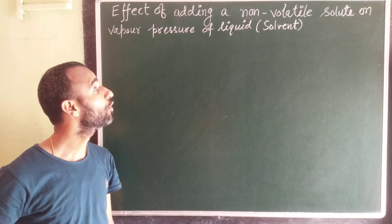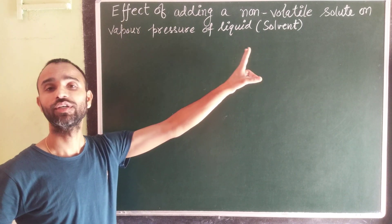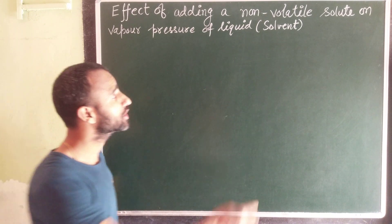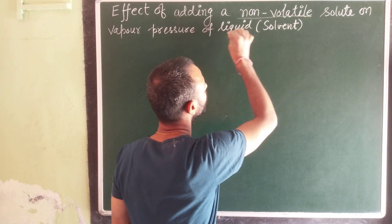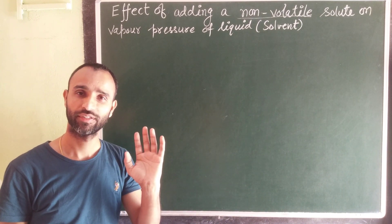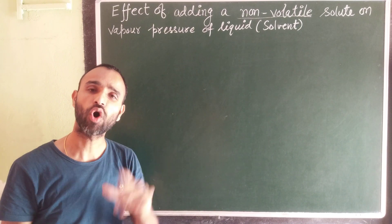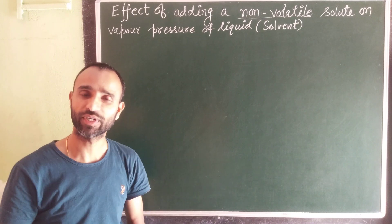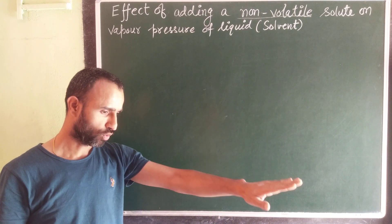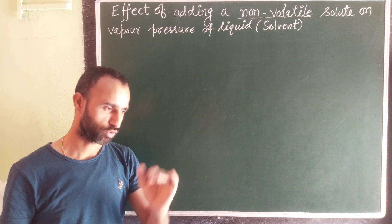Today's topic is the effect of adding a non-volatile solute on the vapor pressure of a liquid, where the liquid is the volatile component, that is, the solvent. Volatile means which can form vapors easily; non-volatile means which cannot form vapor — like sugar or salt, which cannot form vapor on heating, but water can form vapor on heating or even at room temperature through evaporation.